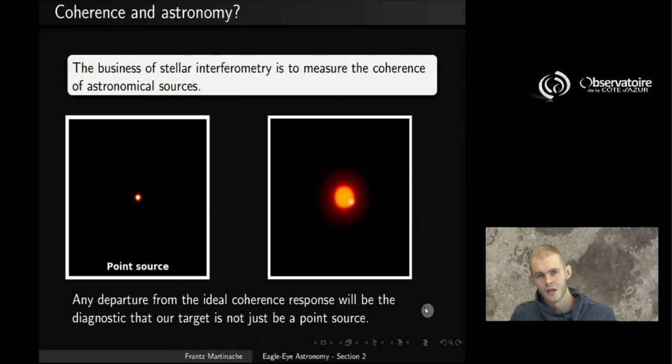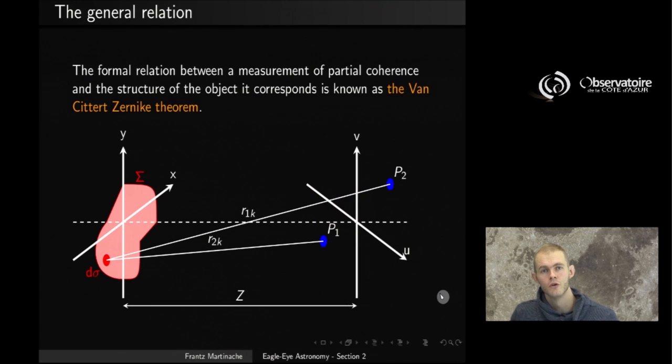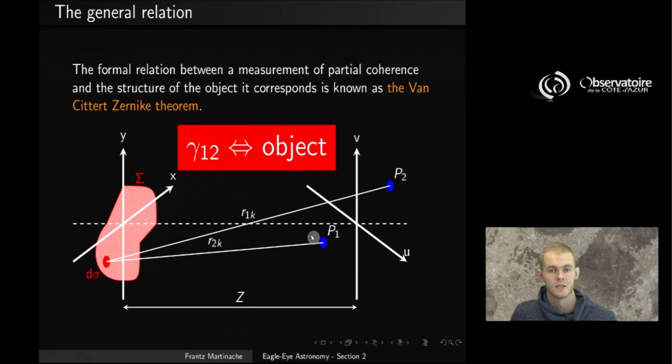Now, being able just to say point source or not is not that exciting, really. We'd like to be able to do a little bit more. And you can actually do more, but you need to look for a general relation that is going to relate coherence measurements to the structure of the object. And one such relation exists. It is called the Van Zittert-Zernike theorem. That is the most fundamental theorem that relates coherence measurements to structures that describe the object, a function that would describe the object you are observing. And we're going to see what that theorem is, and we're going to apply it many times over the rest of this course.